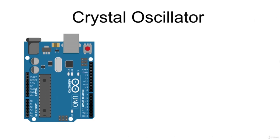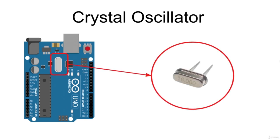The 16 MHz crystal oscillator can be considered as the main heartbeat of the board. With its 16 million pulses per second, it feeds the processor and defines the speed at which all operations are executed. The microcontroller is able to execute a very basic instruction for each pulse, like a simple addition or subtraction, meaning an average of 16 million basic operations per second.